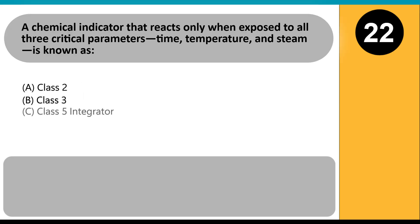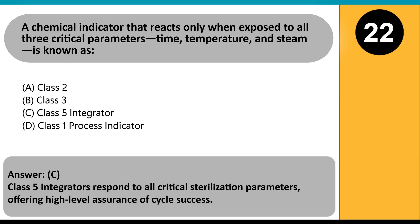A chemical indicator that reacts only when exposed to all three critical parameters — time, temperature, and steam — is known as: A. Class 2. B. Class 3. C. Class 5 integrator. D. Class 1 process indicator. Answer: C. Class 5 integrators respond to all critical sterilization parameters, offering high-level assurance of cycle success.